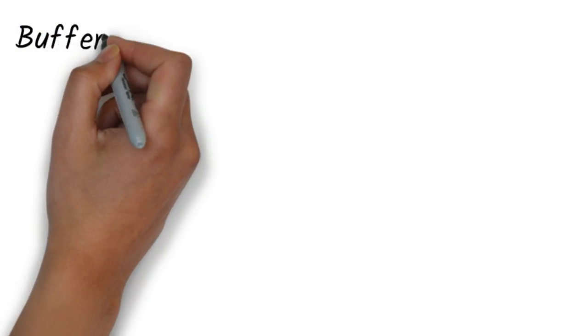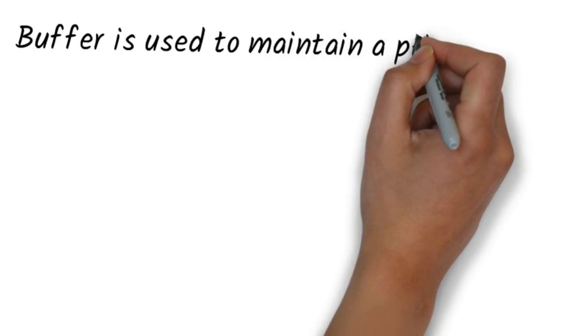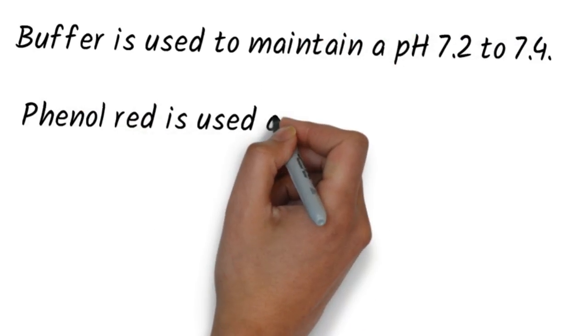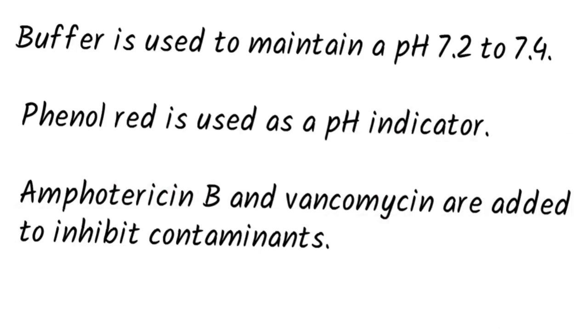Buffer is used to maintain the pH, that is 7.2 to 7.4. It is very important. One other thing it contains is phenol red that acts as a pH indicator. Amphotericin B and vancomycin are also added to inhibit contaminants.